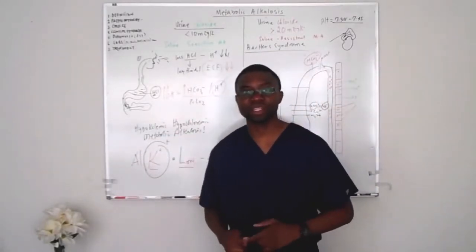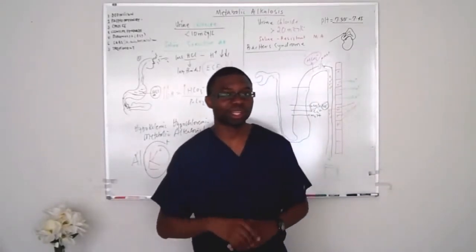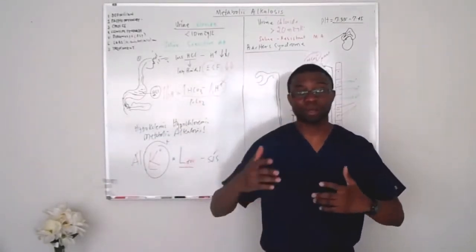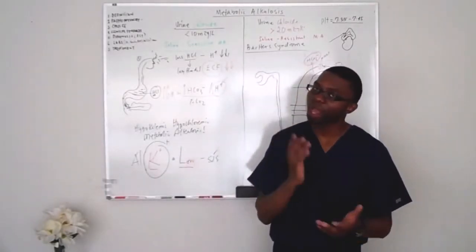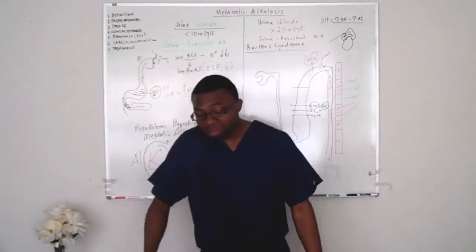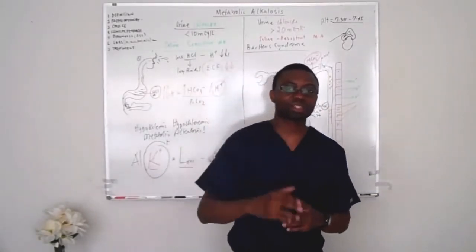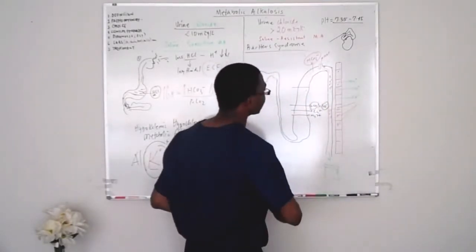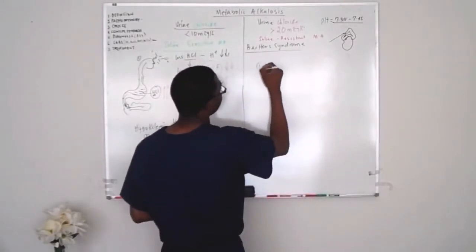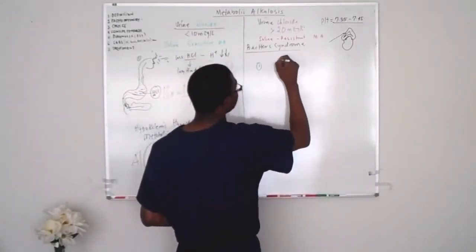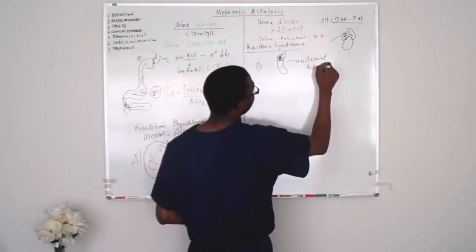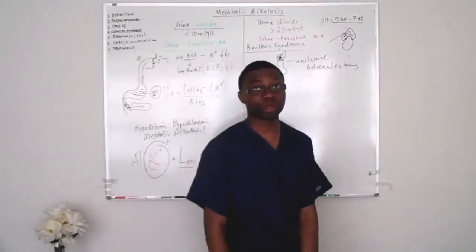That sounds like the adrenal gland is doing something wrong — check the renin-aldosterone level. Aldosterone is going to skyrocket. How do we treat hyperaldosteronism? In two ways. If it's one gland acting up — an adrenal adenoma — what do we do? We take it out surgically. This is called unilateral adrenalectomy — a fancy way of saying we went in there and cut out the little adrenal adenoma.